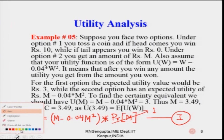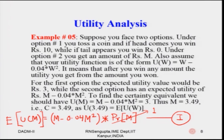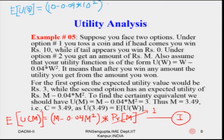Now for the gamble: the expected utility is U(10)×0.5 + U(0)×0.5 = (10 − 0.04×10²)×0.5 + (0 − 0.04×0²)×0.5. This is Equation 2. We equate Equation 1 and Equation 2 — everything in Equation 2 is known, and M in Equation 1 is the unknown certainty value to solve for.